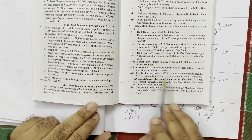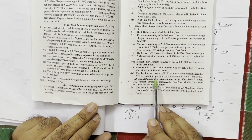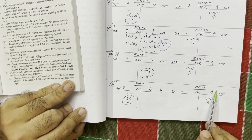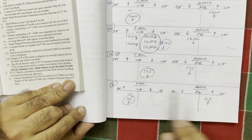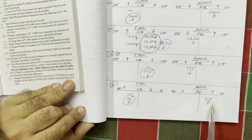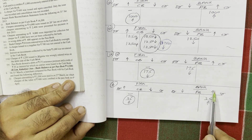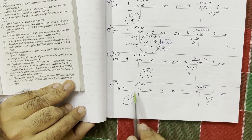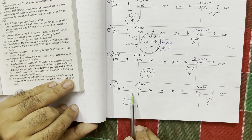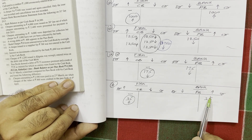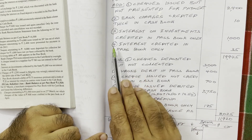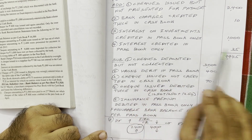Ninth point, second sub-point: the pass book shows a credit of 35 as interest. The bank deposited interest on the favorable bank balance into the firm's account — so bank balance increased, pass book credited 35. Since it is not recorded in cash book, we increase cash book by 35. Under additions, fourth point: interest credited in pass book only — 35 rupees.